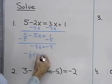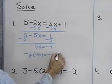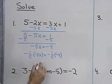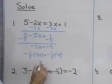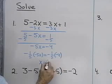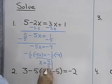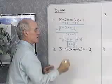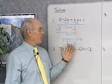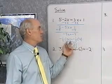If I do that to one side, I do that to the other side also. So, negative 1 fifth times negative 5x is positive 1x. Negative 1 fifth times negative 4 is positive 4 fifths. So, my solution to this equation is x equals 4 fifths. I used 2 properties of equality to find the solution.